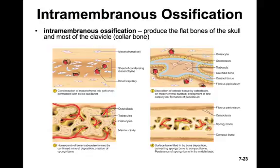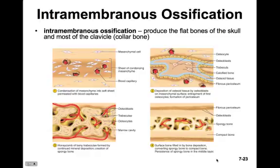The osteoblasts continue to deposit minerals and produce a honeycomb of bony trabeculae. Some trabeculae persist as permanent spongy bone, while others are reabsorbed by osteoclasts and remodeled to form a marrow cavity. The trabeculae at the surface continue to calcify, converting spongy bone into compact bone, giving rise to the sandwich-like arrangement typical of a flat bone — spongy bone in the middle and compact bone on either side.